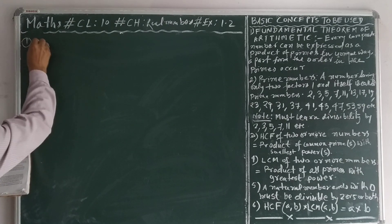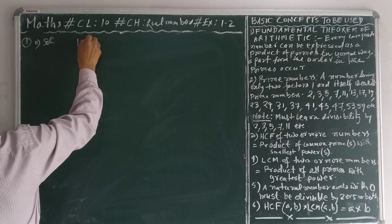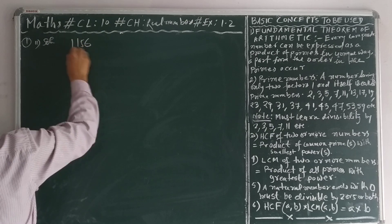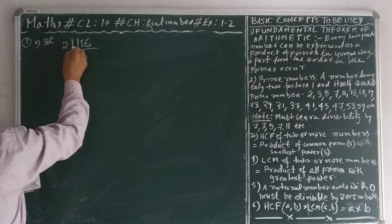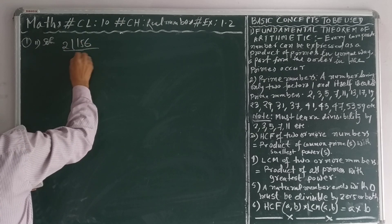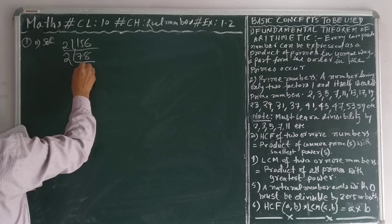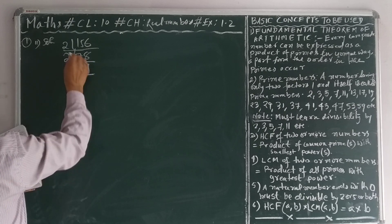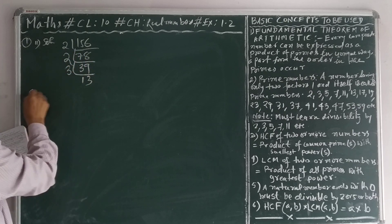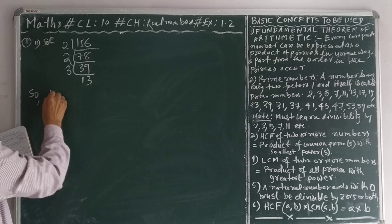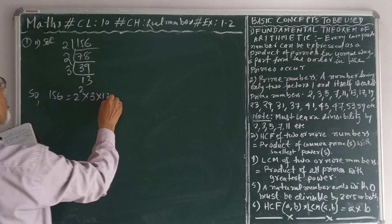Question 1, number 1.2. Solution: 156 is an even number, so 2 is a prime factor. 2 divides 78, 2 divides 39, and 39 is divisible by 3, giving 13. So 156 is equal to 2 to the power 2 into 3 into 13.